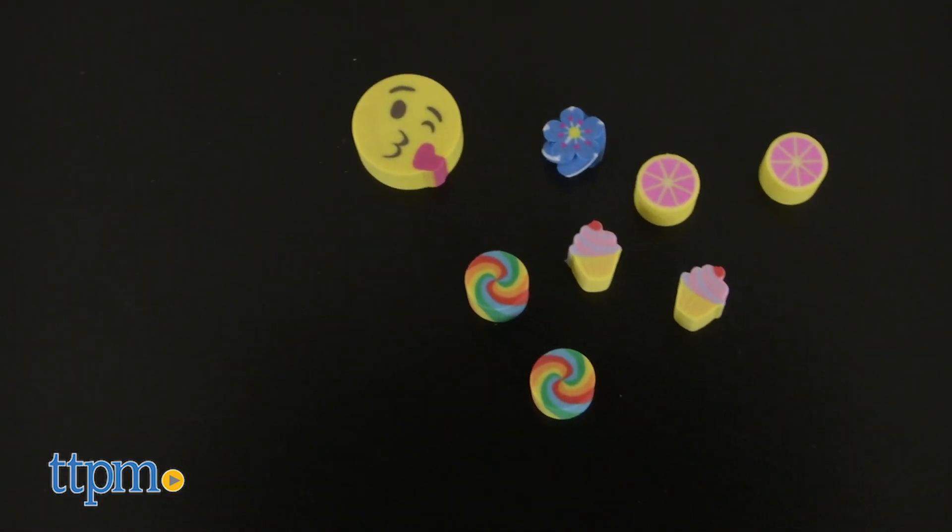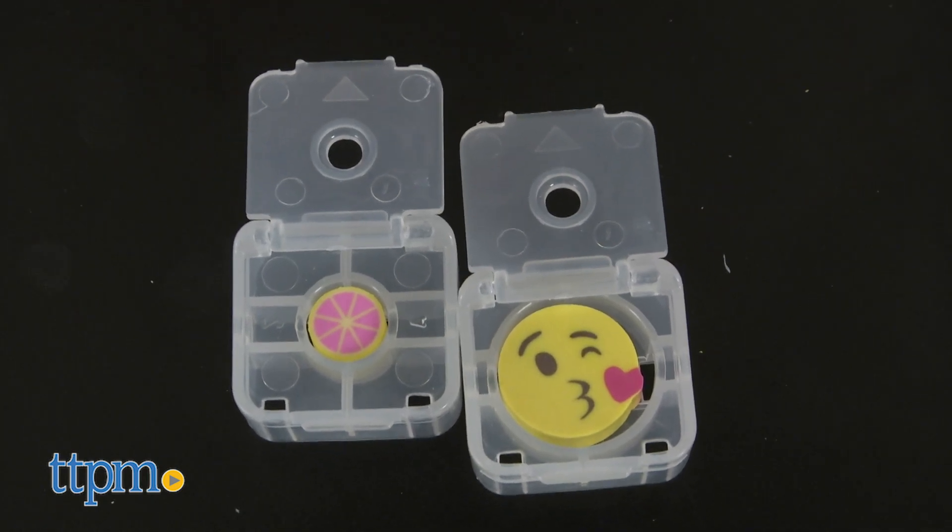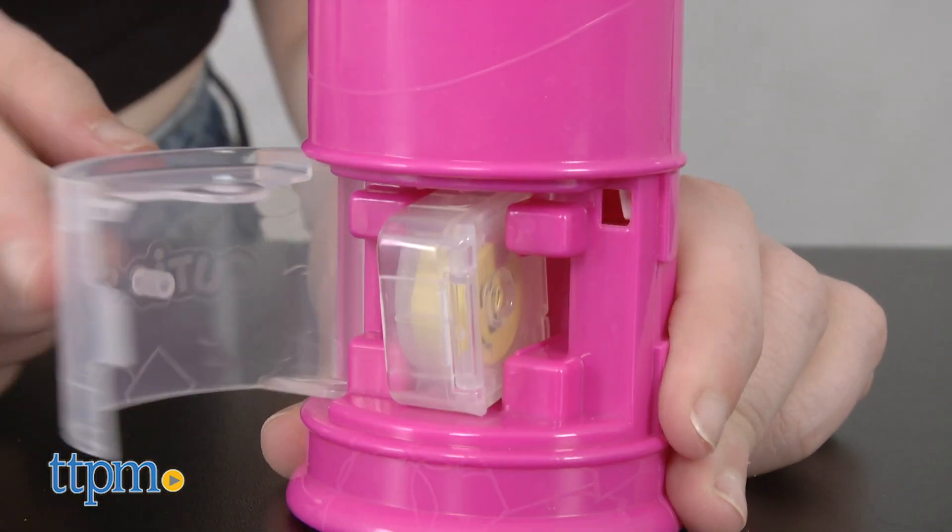You'll need either the Cutie coring container or the Mighty coring container, depending on the bead size. Each container features two directions to core the beads, lengthwise or directly through the center.